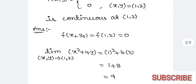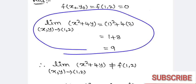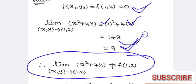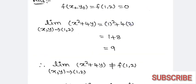We find the limit as (x, y) → (1, 2) of x² + 4y. Substituting x = 1 and y = 2, you get 1 + 8 = 9. Here we got f(1, 2) = 0, but the limit is 9. Both are not equal. The limit exists, but both are not equal. Therefore, the given function is not continuous at (1, 2).